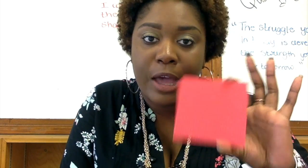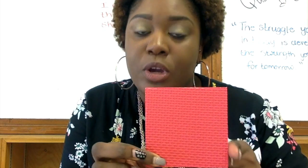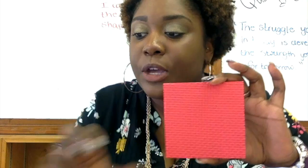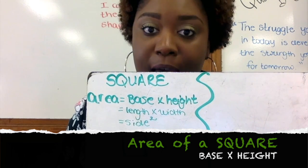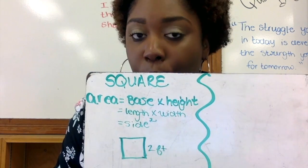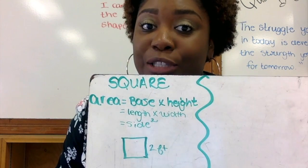The first thing we're going to talk about is the area of a square. The bottom is called the base, and this side is the height because it's how tall it is. The formula for the area of a square is base times height — it can also equal length times width, or side squared.